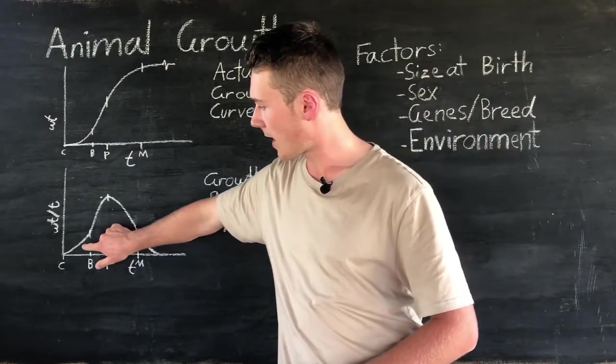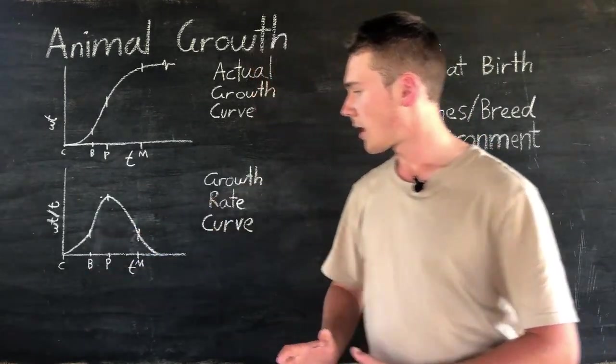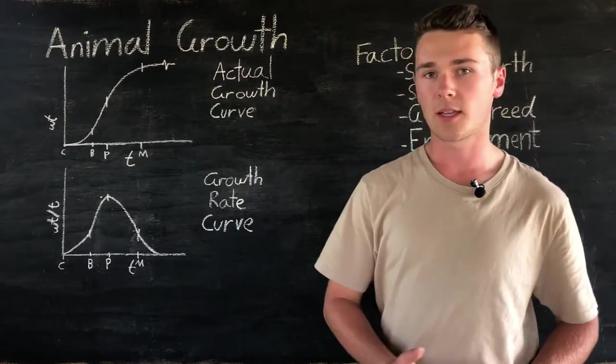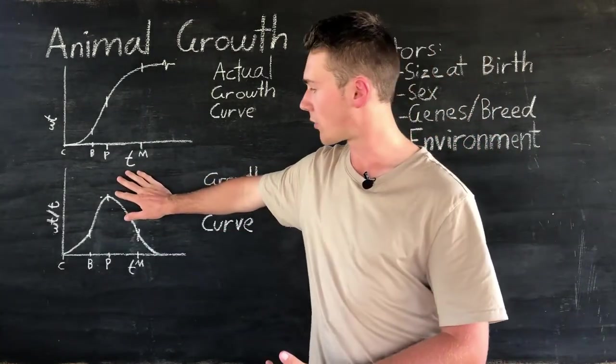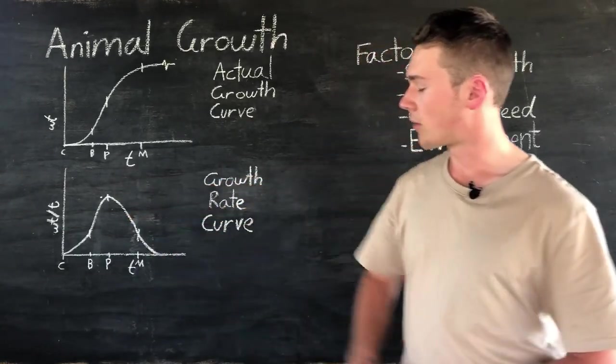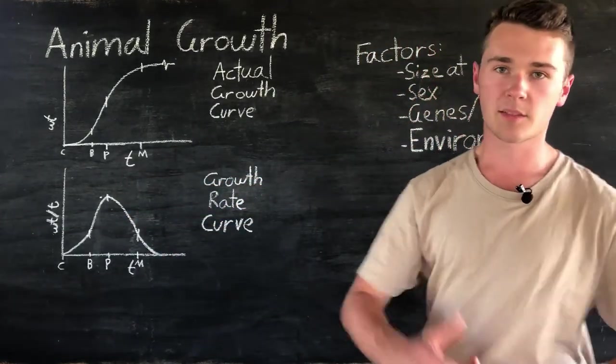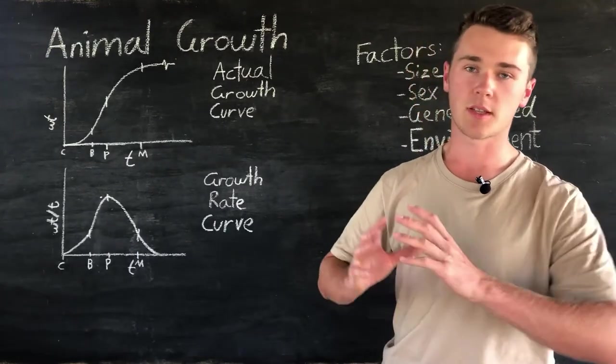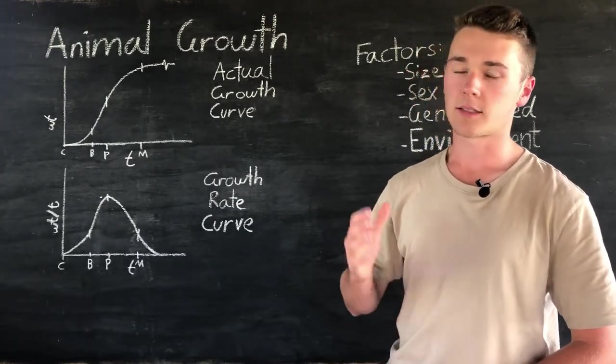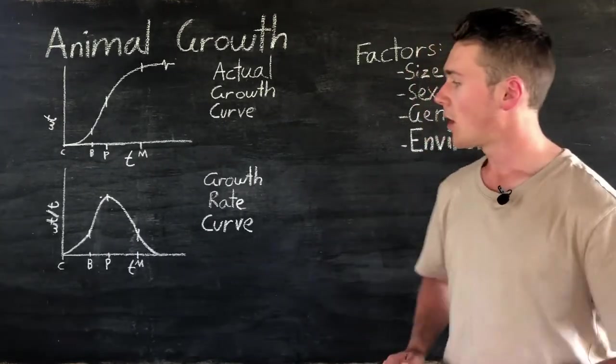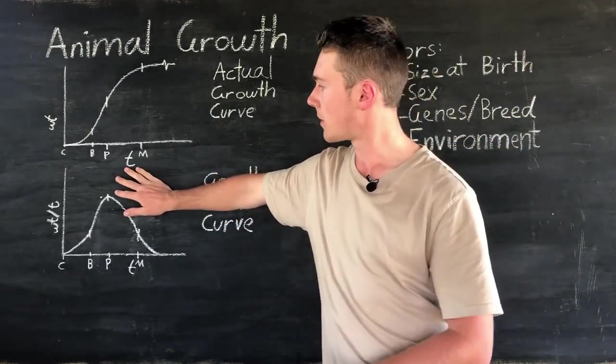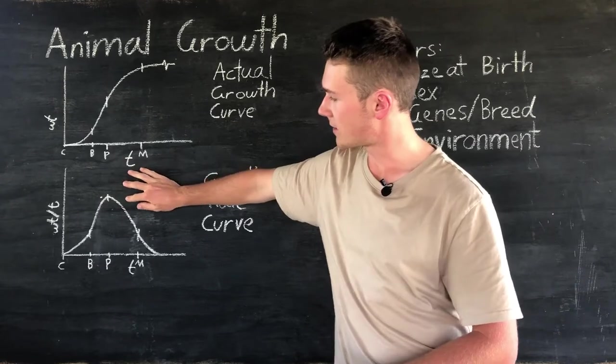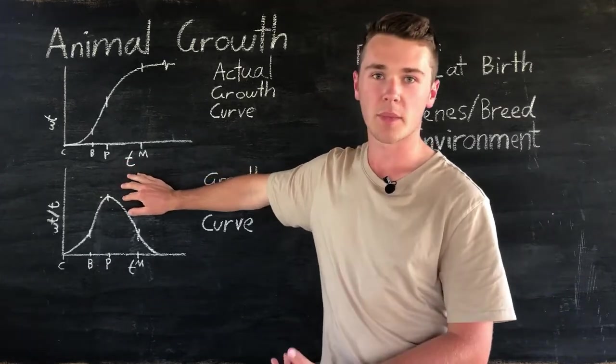So as you can see here the rate of growth builds up until puberty where we get our maximum amount of growth, and then it plateaus from there. If we're looking to maximize our turnover or produce the most amount of kilos per hectare, we need to be selling at the puberty stage or a little bit past it so we can capture this maximum amount of growth.